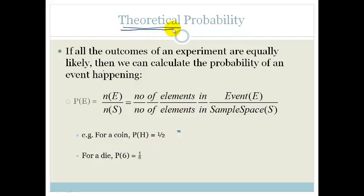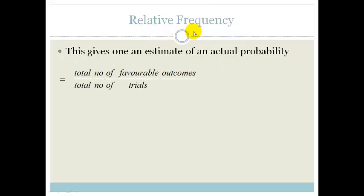It doesn't take into account what really happens in real life. Relative frequency is an estimate of what actually happens. So, it's the total number of favorable outcomes over the total number of trials.